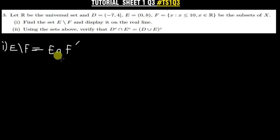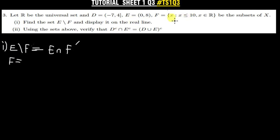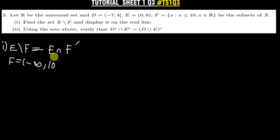To find E intersection F complement, we first need to list F. Since F is in set-builder notation, we convert it to interval notation. F contains all numbers less than or equal to 10, so in interval notation F is written as (−∞, 10]. Since there is an equal sign, 10 is also part of F.